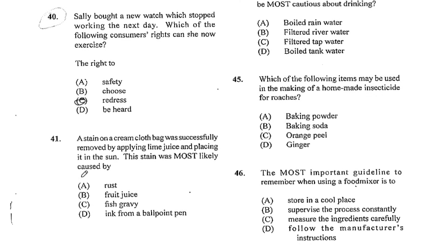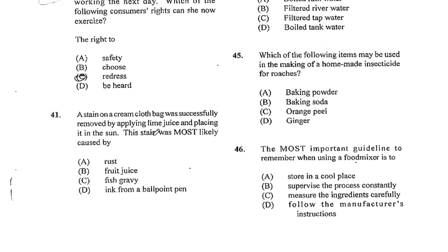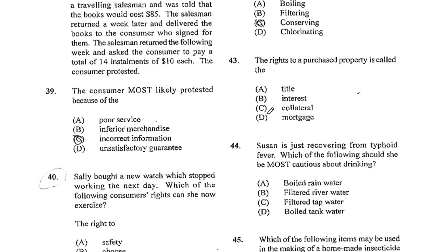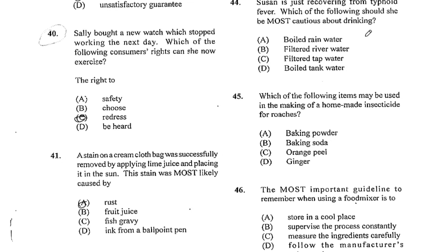Number 41. A stain on a cream cloth bag was successfully removed by applying lime juice and placing it in the sun. This stain was most likely caused by A, rust. Number 42. Which of the following is not a method of water purification? That would be C, conserving. Number 43. The rights to a purchased property is called A, the title. Number 44. Susan is just recovering from typhoid fever. Which of the following should she be most cautious about drinking? That would be B, filtered river water. Number 45. Which of the following items may be used in the making of a homemade insecticide for roaches? The answer is B, baking soda. Number 46. The most important guideline to remember when using a food mixer is to D, follow the manufacturer's instructions.